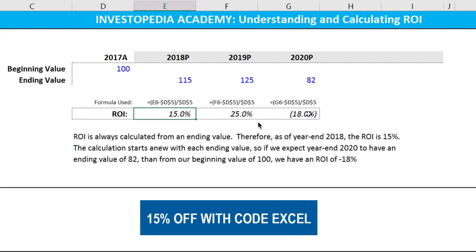Following financial modeling best practices, we do want to break out each different year as its own line item to get a sense of where the return on investment was up and subsequently down.